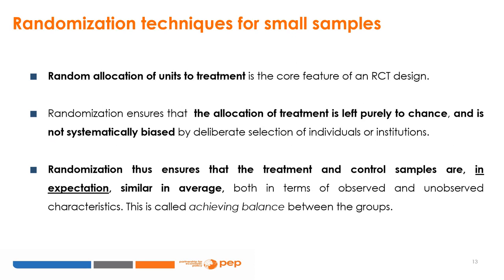Once we have decided the level of treatment assignment, it is time to tackle the issue of randomisation. Random allocation of units to treatment is the core feature of an RCT design. Randomisation ensures that the allocation of treatment is left purely to chance and is not systematically biased by deliberate selection of individuals or institutions. It thus ensures that treatment and control samples are, in expectation, similar on average in terms of both observed and unobserved characteristics — this is called achieving balance between the groups.